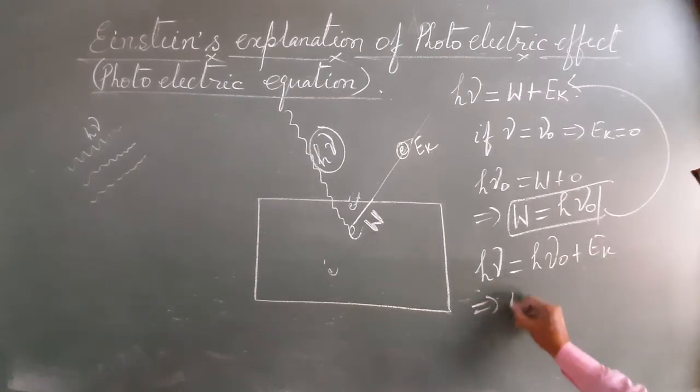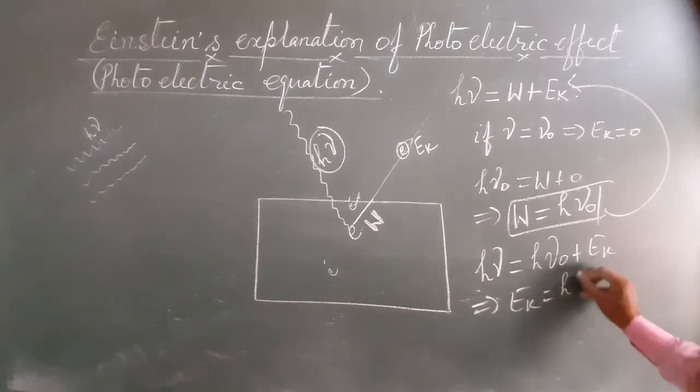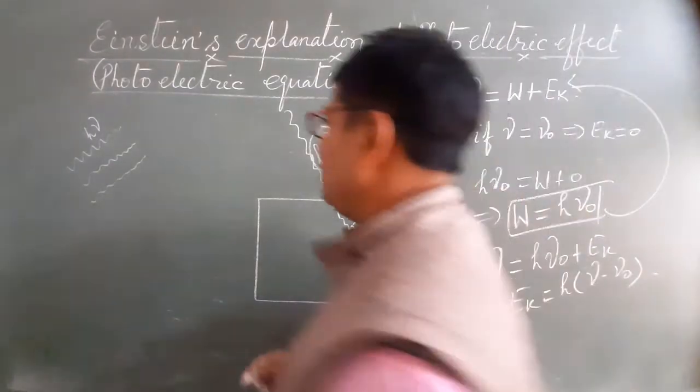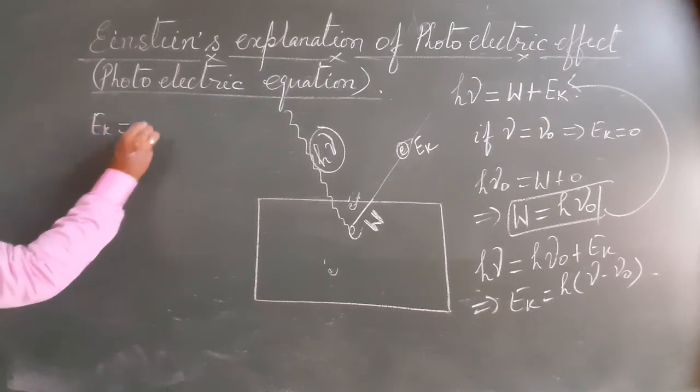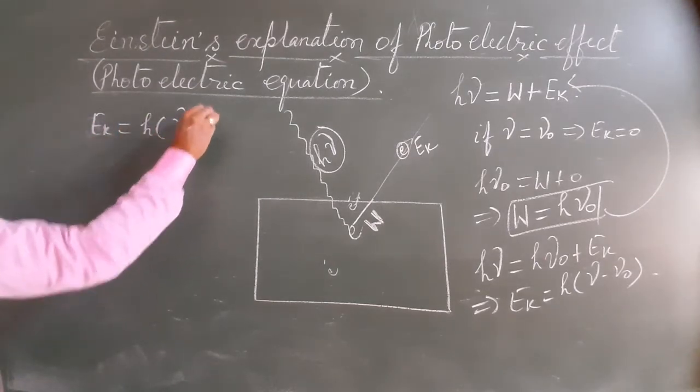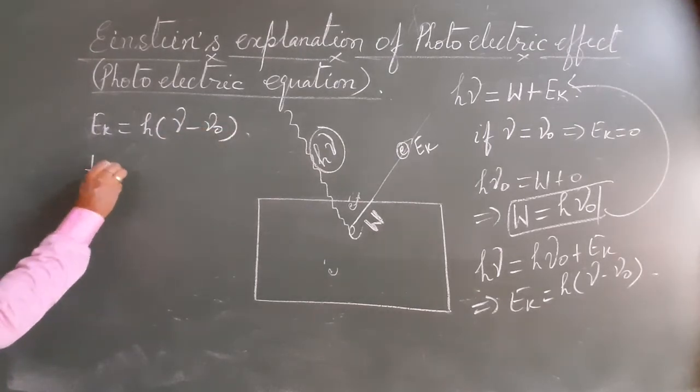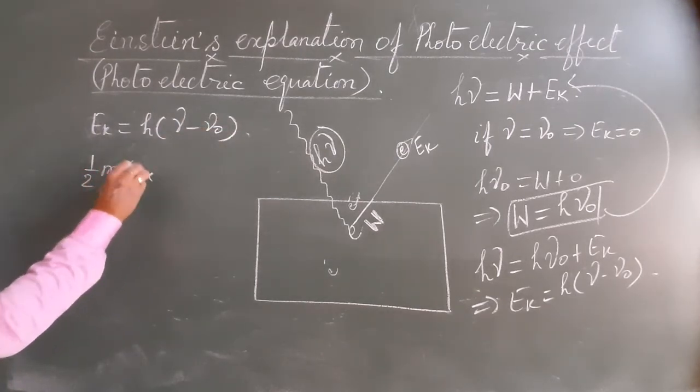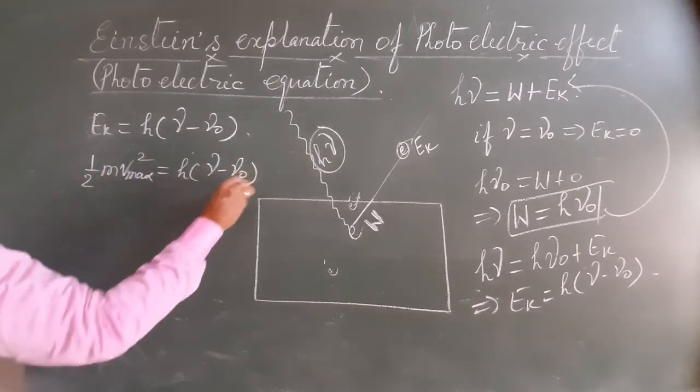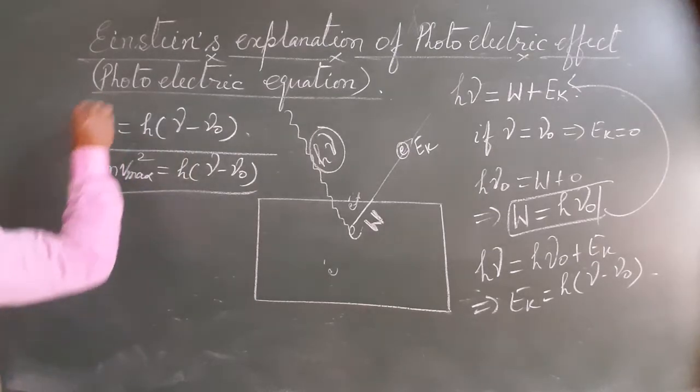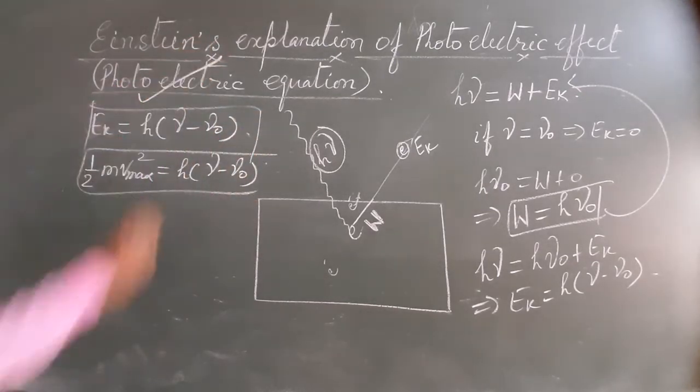We get H nu is equal to H nu naught plus EK. So what about EK? The maximum kinetic energy of emitted photoelectron can be written as H nu minus H nu naught. And this can be written as 1 by 2 m v max squared. This is Einstein's photoelectric equation.